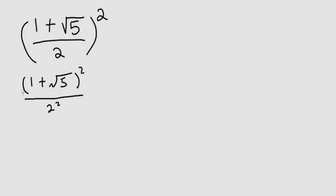And for the numerator I'll use this rule. A plus B all squared is equal to A squared plus 2AB plus B squared. Where here A is equal to 1 and B is equal to the square root of 5.